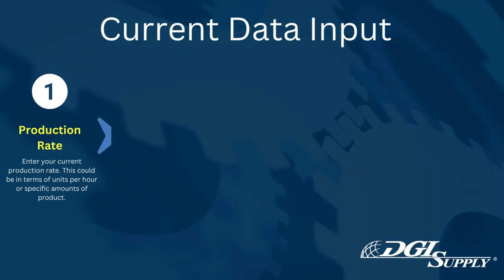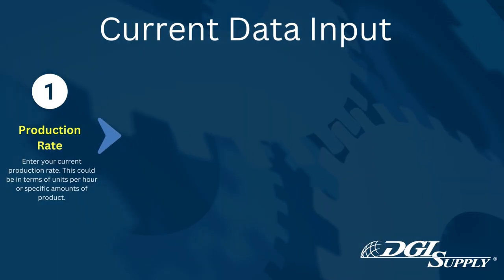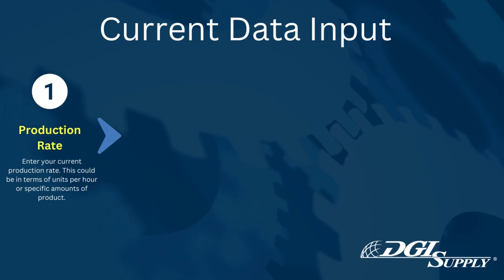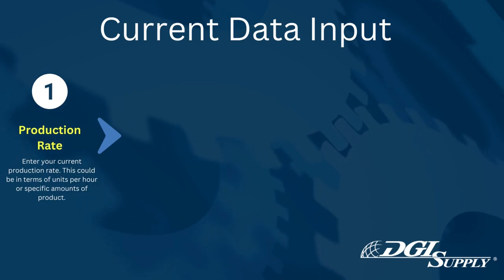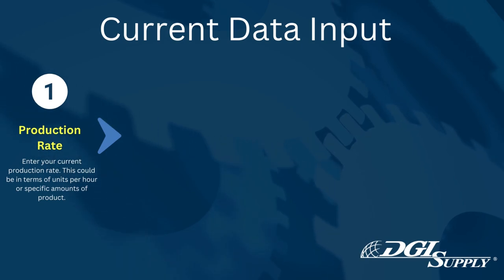1. Production Rate. Enter your current production rate. This could be in terms of units per hour or specific amounts of product.